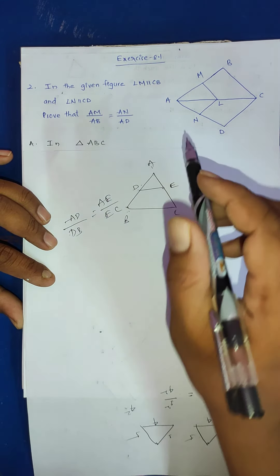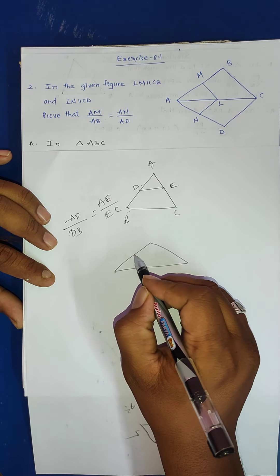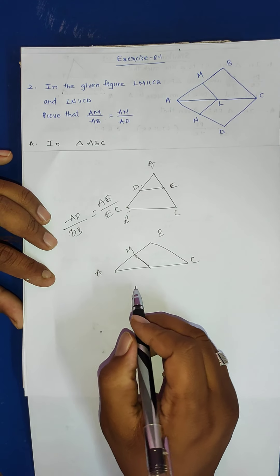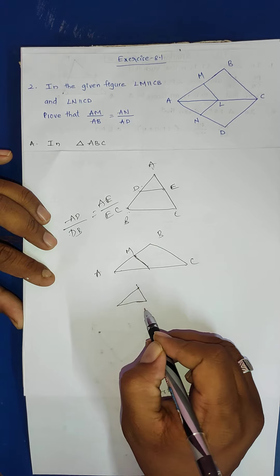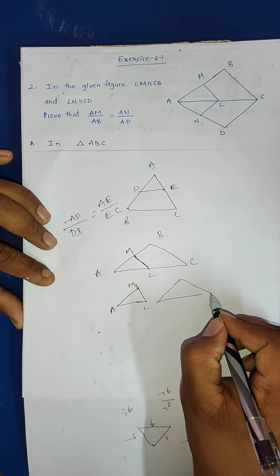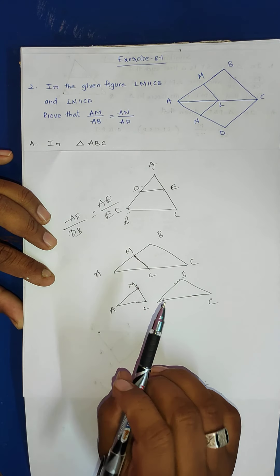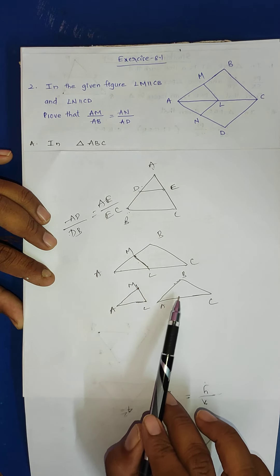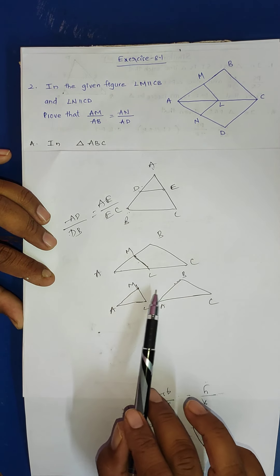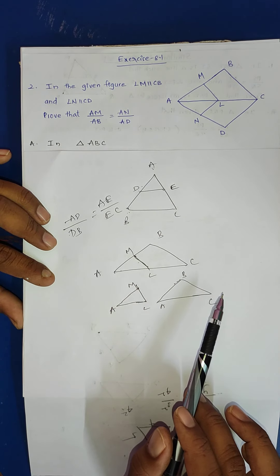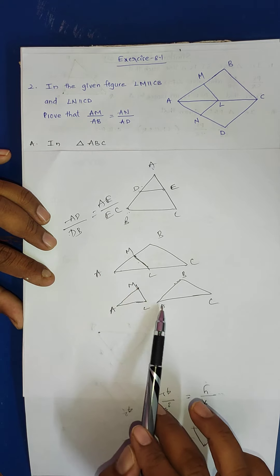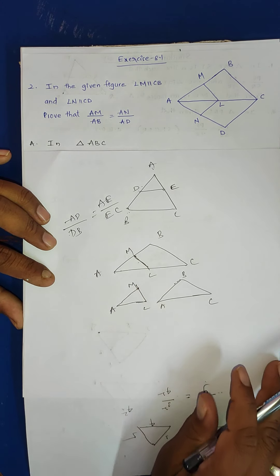Which property do we need? Consider triangle ABC. Inside it, there are two triangles: triangle AML and triangle ABC. These two triangles are similar to each other because these angles are the same. Since they are similar, corresponding sides are in the same ratio. AB corresponds to AM, and AC corresponds to AL. So AM by AB is equal to AL by AC — that is the difference here.